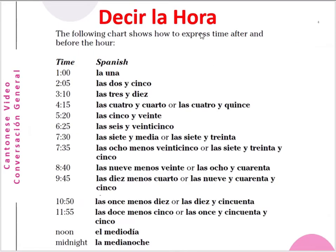Telling time again — decir la hora. The following chart shows how to express time after and before the hour. One o'clock: la una. Two and five: las dos y cinco. Three and ten: las tres y diez. Four fifteen: las cuatro y cuarto, o las cuatro y quince. Five twenty: las cinco y veinte. Six twenty-five: las seis y veinticinco. Seven thirty: las siete y media, o las siete y treinta.